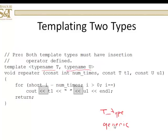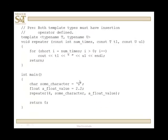Okay. So again, in this case, the function repeater has two template parameters. We pass to it a const int. That's the number of times that the for loop is going to be executed. And then a const t and a const u. And this function is simply going to output t1 and u1 multiple times. And again, the insertion operator must be defined for the two types.